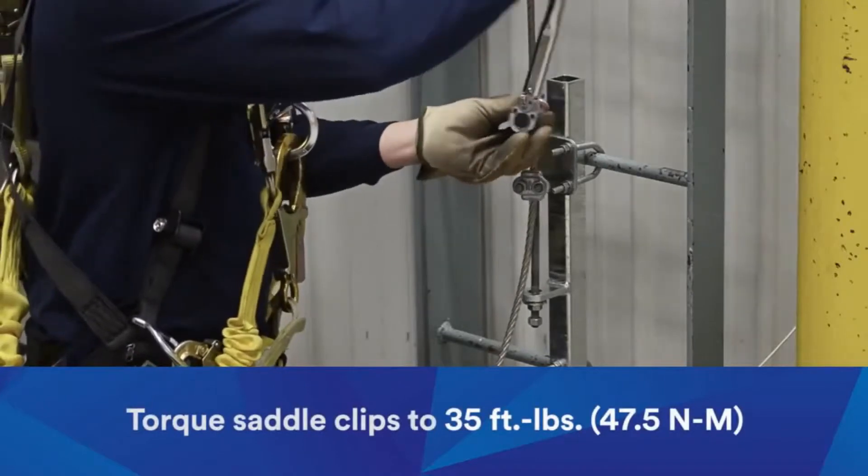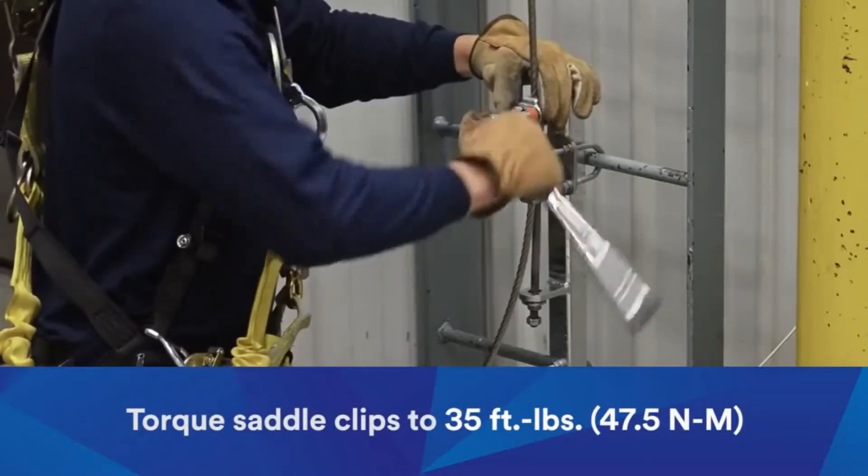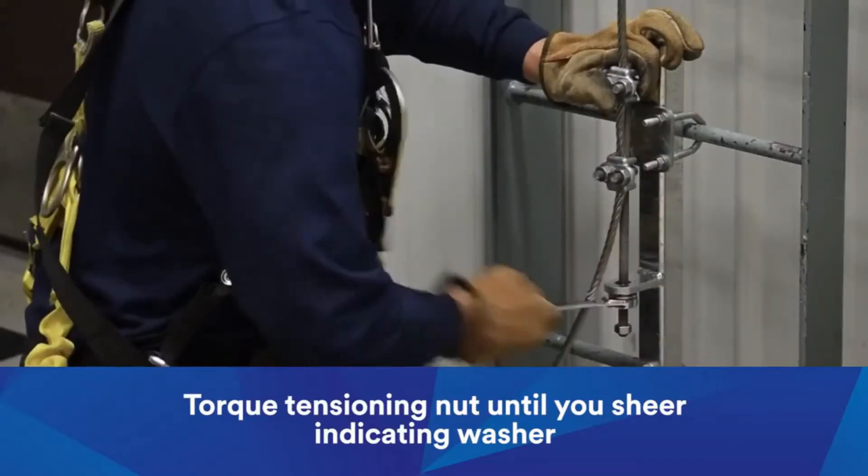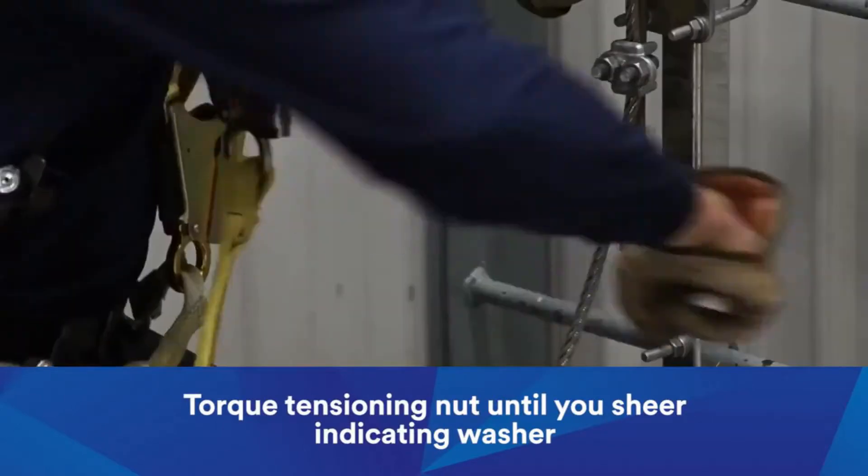Torque the saddle clips to 35 foot-pounds, or 47.5 Newton meters. Tighten the tensioning nut until the ring on the tension indicator is sheared off, and you hear a popping sound.